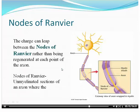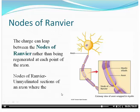The charge can leap on a myelinated axon — it can leap between the nodes of Ranvier. The action potential starts, sodium goes in, potassium goes out, and since the section in between is insulated, the charge just jumps to the next node, where sodium goes in and potassium goes out again. Nodes of Ranvier are unmyelinated sections of the axon where the voltage-activated gates are located, rather than being regenerated at each point of the axon.